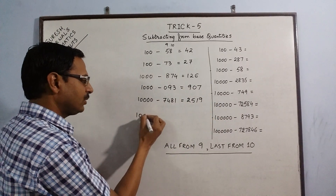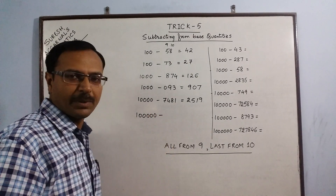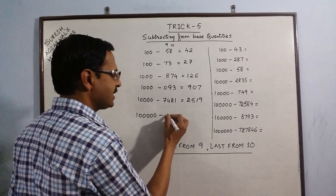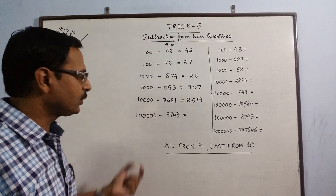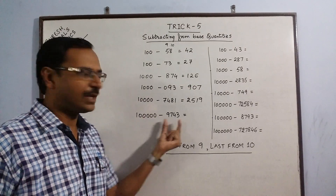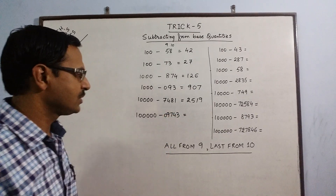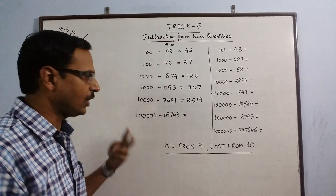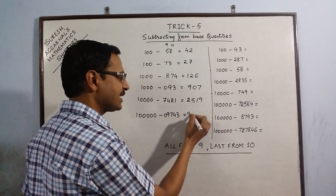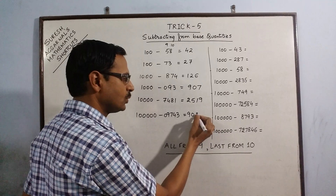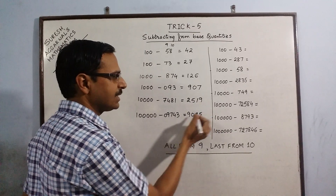We will have a larger number now — say 5 zeros — and we have to subtract a 4-digit number: 9743. Now you have to equalize the number of digits with the number of zeros, so put a 0 before it to make it 5 digits. Now apply the rule: 9 minus 0 is 9, 9 minus 9 is 0, 9 minus 7 is 2, 9 minus 4 is 5, and 10 minus 3 is 7. The answer is 90257.